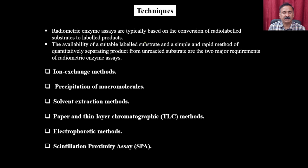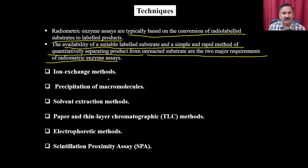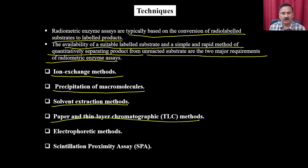Radiometric assays are typically based on the conversion of radiolabeled substrate to labeled product. The availability of a radiolabeled substrate and a simple, rapid method of separating the product from the unreacted substrate are the two major requirements of radiometric enzyme assays. Associated separation techniques include ion exchange, precipitation, solvent extraction, paper and thin layer chromatography, electrophoretic methods, and scintillation proximity assays. Since both unreacted substrate and labeled product are radioactive, you must purify the labeled product.